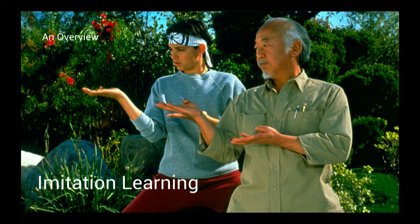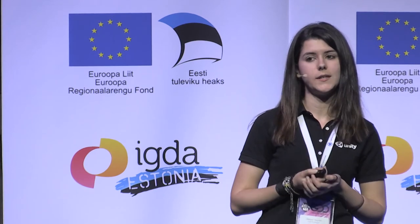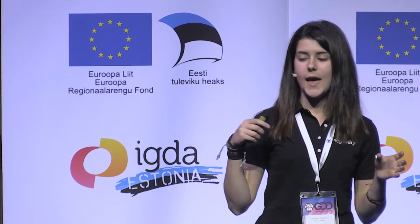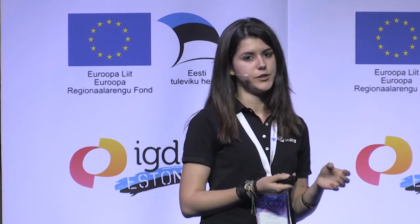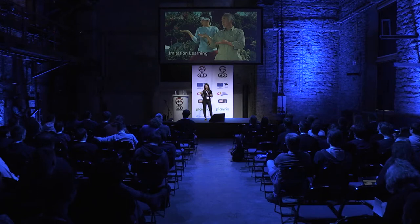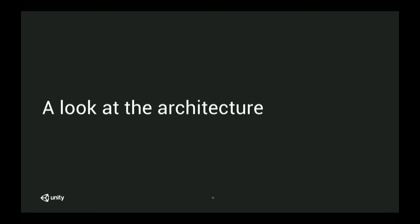The third version, machine learning agents version 0.3, released last month, is imitation learning. Instead of reinforcement learning, we now have a student and a teacher in the scene. The student copies whatever the teacher does and learns accordingly. In this case, the teacher is the human player, so we are teaching the student what it has to do.